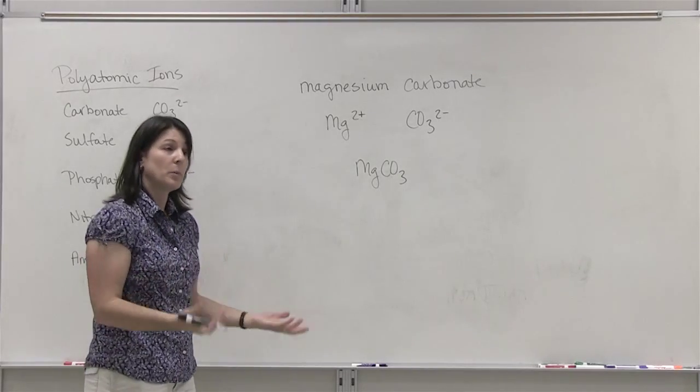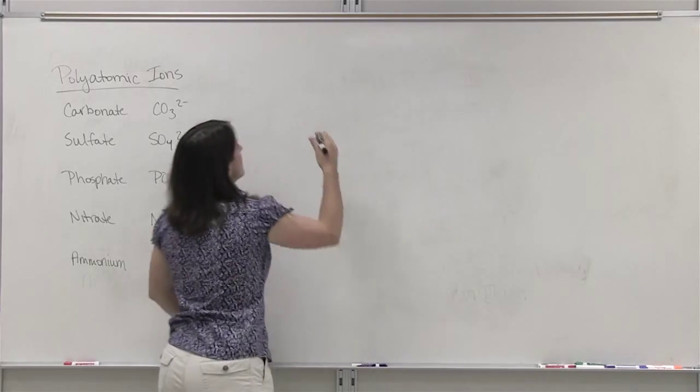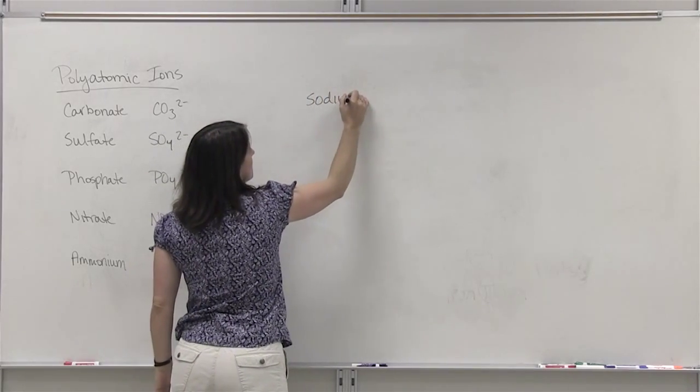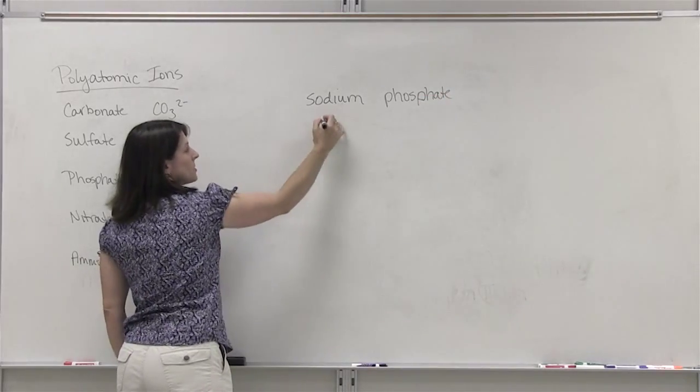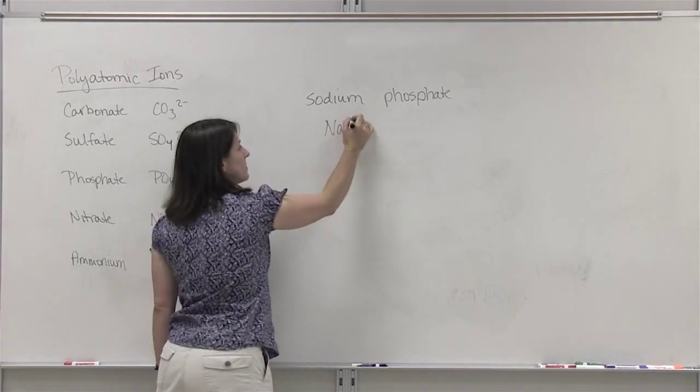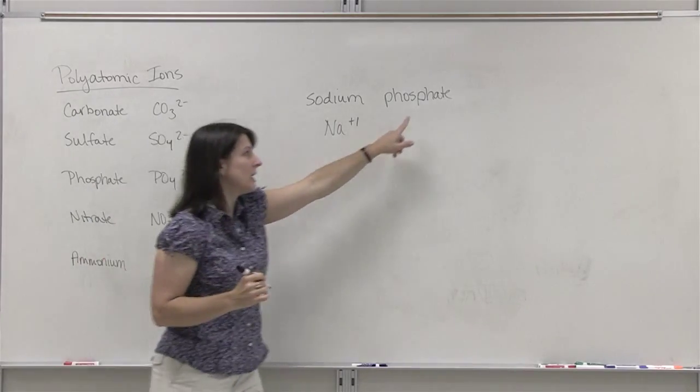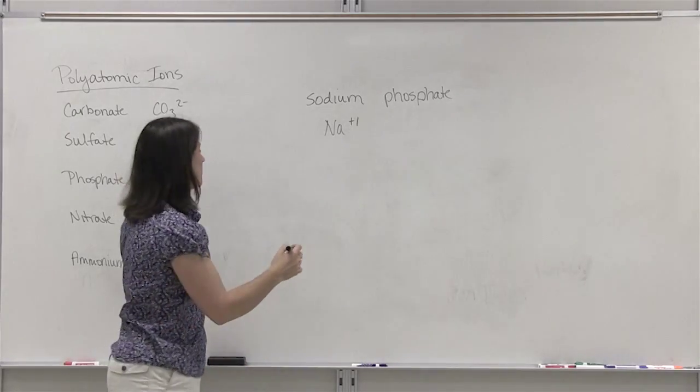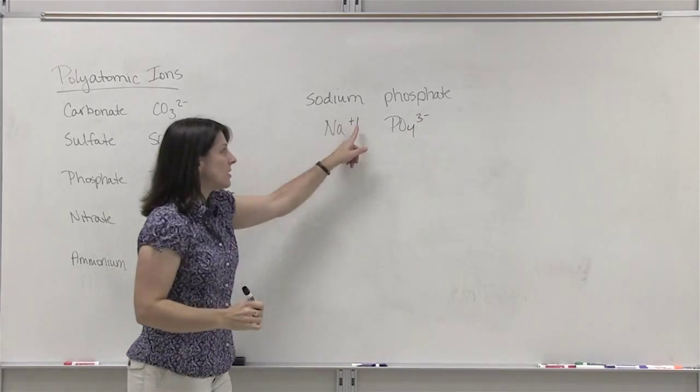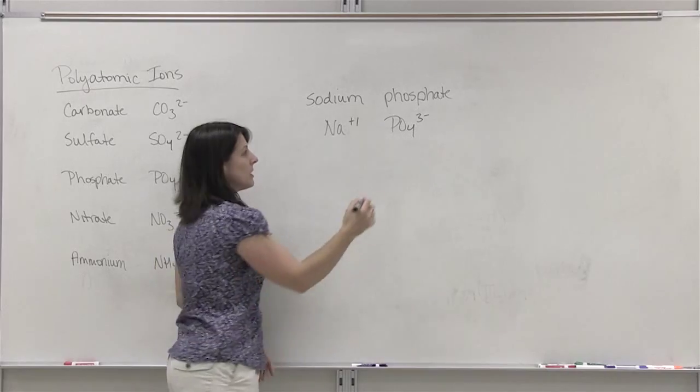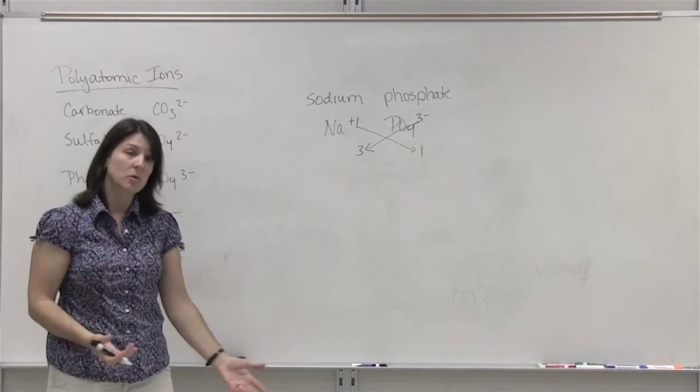If your charges are not equal, we would use the same crisscross process that we used previously. So if we had something like sodium phosphate. Sodium is a group 1A metal, so it's a plus 1 charge. I'll put the 1 just so we remember. Phosphate is a group and you can tell by the ending. It has an ATE ending. That indicates that it's a group. Phosphate has a formula of PO4 3 minus. Notice that our charges are not the same. So we're going to have to balance that and we'll use the crisscross method. Crisscross the number of the charge to the opposite ion. It becomes the subscript in your formula.